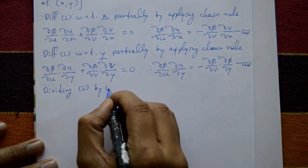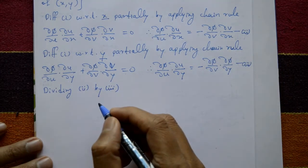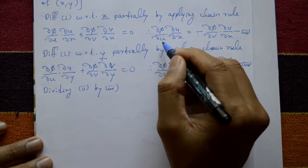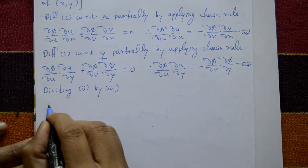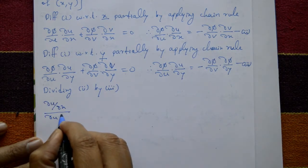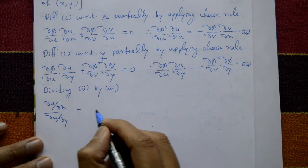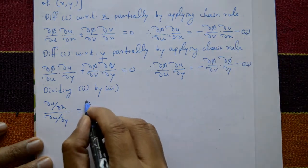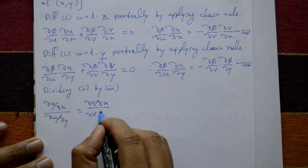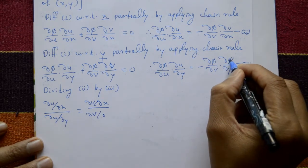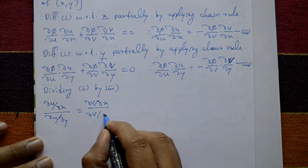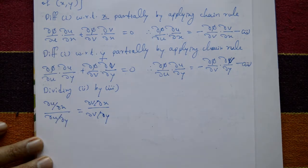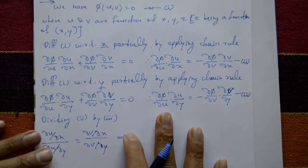Now divide equation two by equation three. On the left side, ∂φ/∂u cancels, leaving (∂u/∂x)/(∂u/∂y). On the right side, the minus signs cancel and ∂φ/∂v cancels, leaving (∂v/∂x)/(∂v/∂y).